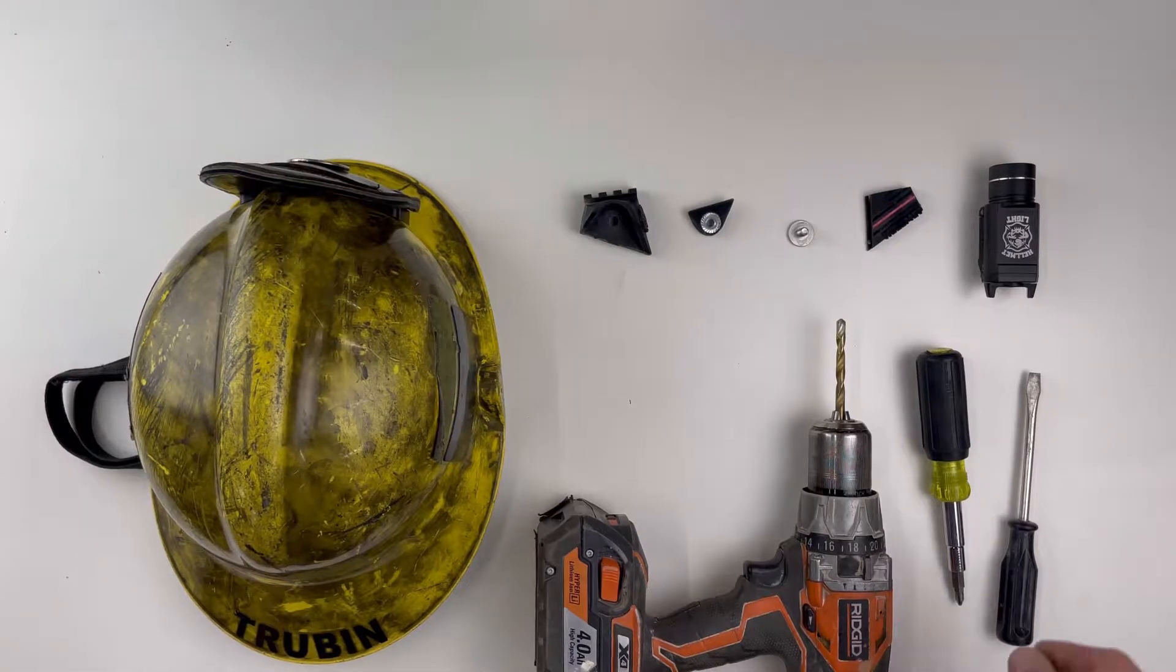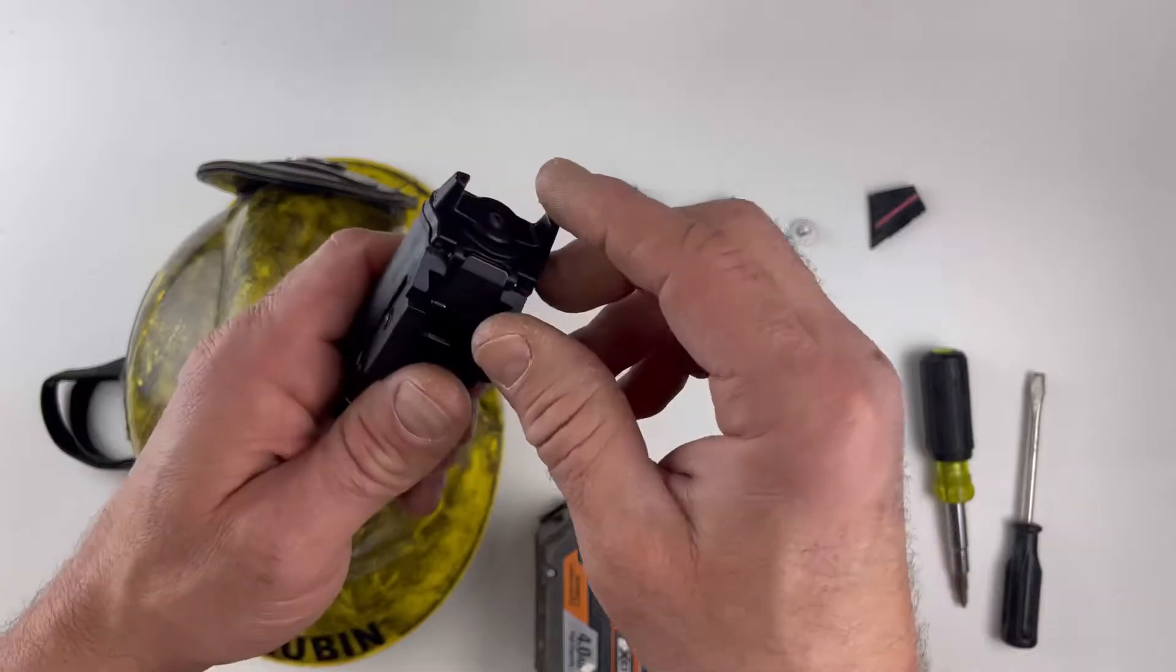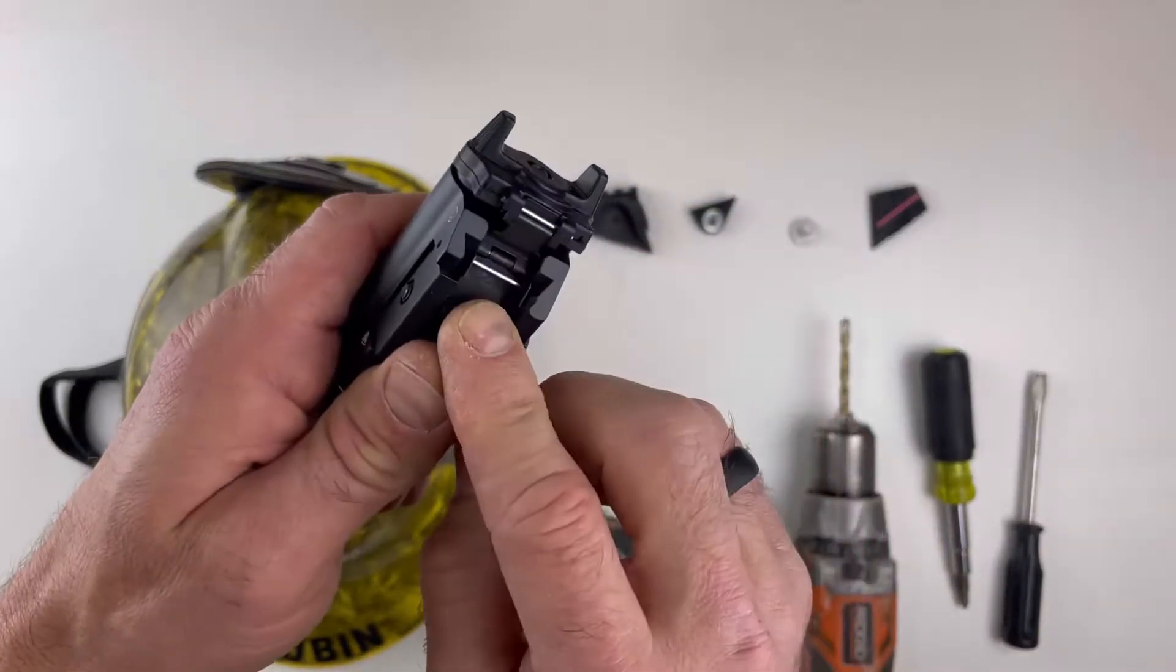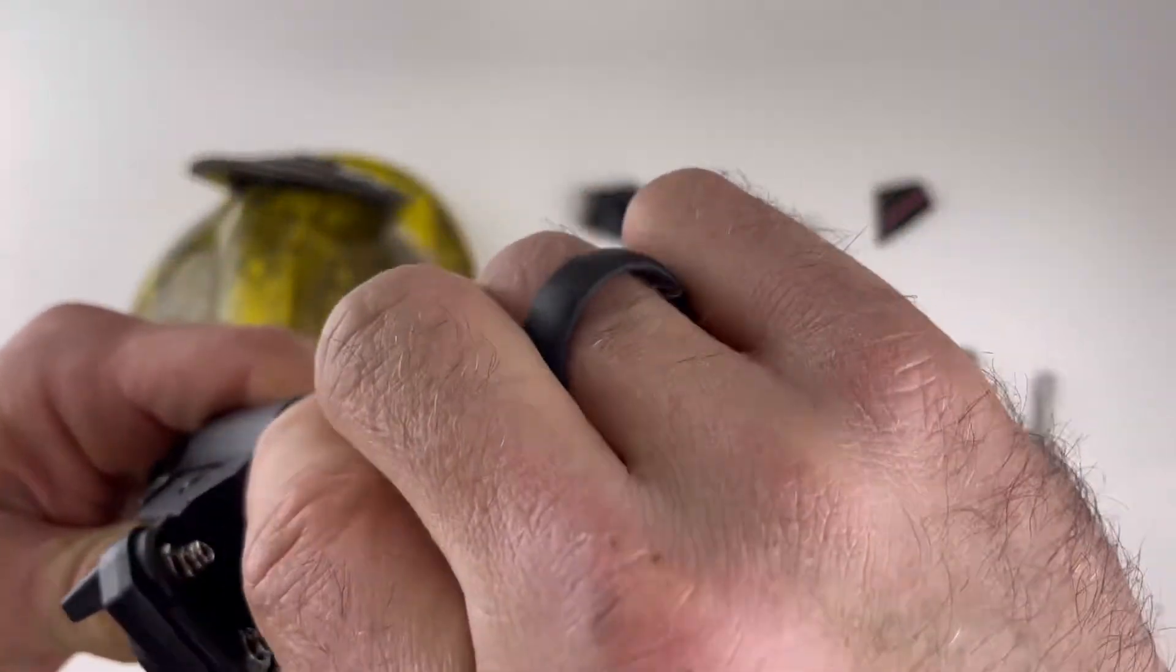Let's install the helmet mount. Take the flashlight. At the bottom, open the latch. Pull the cap downwards. Remove the paper tabs.